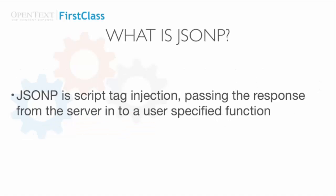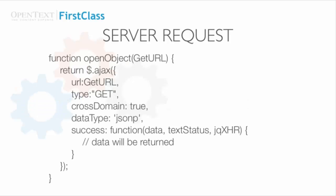With the first-class API, you need to mold both your request and response to handle JSONP. JSONP is a script tag injection passing the response from the server into a user-specified response, and in doing so, you can have cross-domain JSON requests. As we've seen with the API inspector, we send a request to the server using the jQuery Ajax function, and the data is returned as JSON wrapped in the success callback.